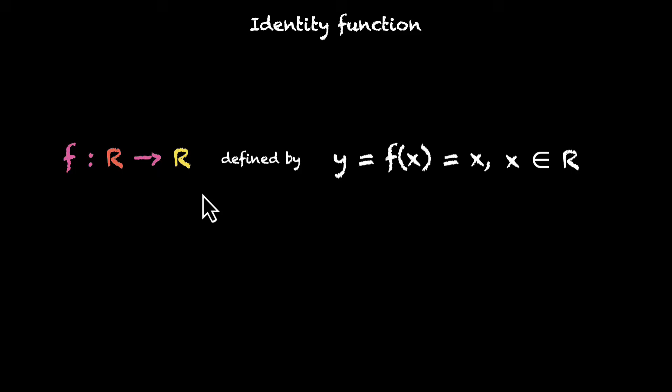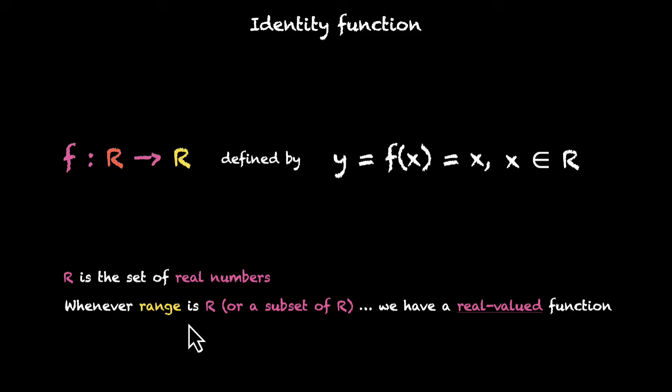Here's a much more detailed interpretation. R is the set of real numbers, and whenever the range is R or any subset of R, we call it a real-valued function. Further, when the domain is also R or a subset of R, we have a real function. So when just the range is real, we call it real-valued. When both range and domain are real, we call it a real function.